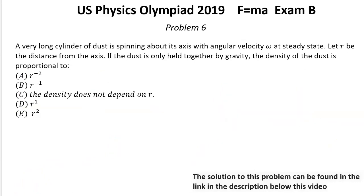Problem number 6. A very long cylinder of dust is spinning about its axis with angular velocity omega at steady state. Let r be the distance from the axis. If the dust is only held together by gravity, the density of the dust is proportional to which one? Solution for problem number 6.